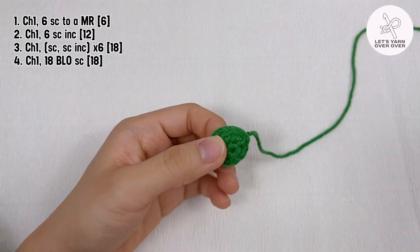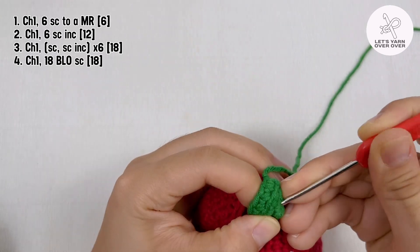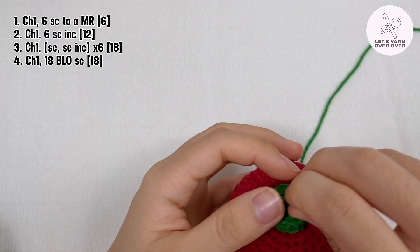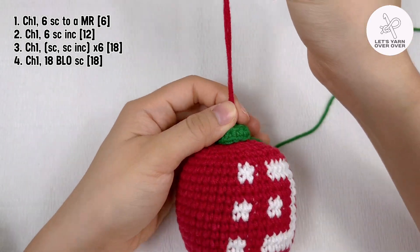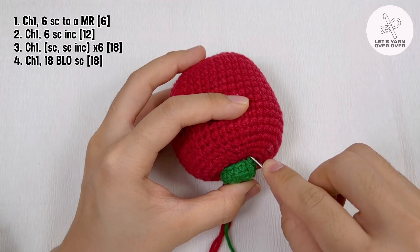Fasten off and leave a tail for sewing. Now I will pull the red yarn for hanging through the center of the green top. The ornament is almost finished. All you have to do now is to sew the top in place.